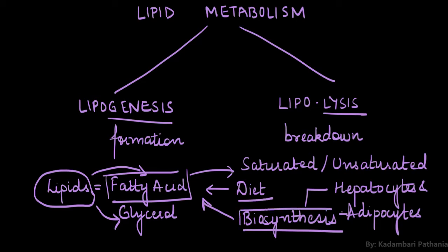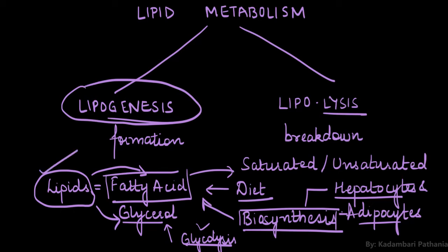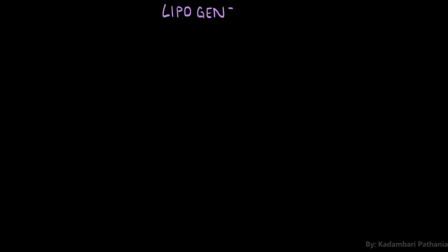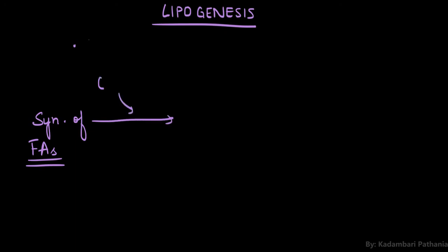Sources of fatty acid include biosynthesis in hepatocytes and adipocytes. The next raw material for formation of lipid is glycerol, which we usually get through the process of glycolysis — it is an intermediate formed during glycolysis. Now we will study lipogenesis, in which we see how lipids are formed from fatty acids and glycerol.